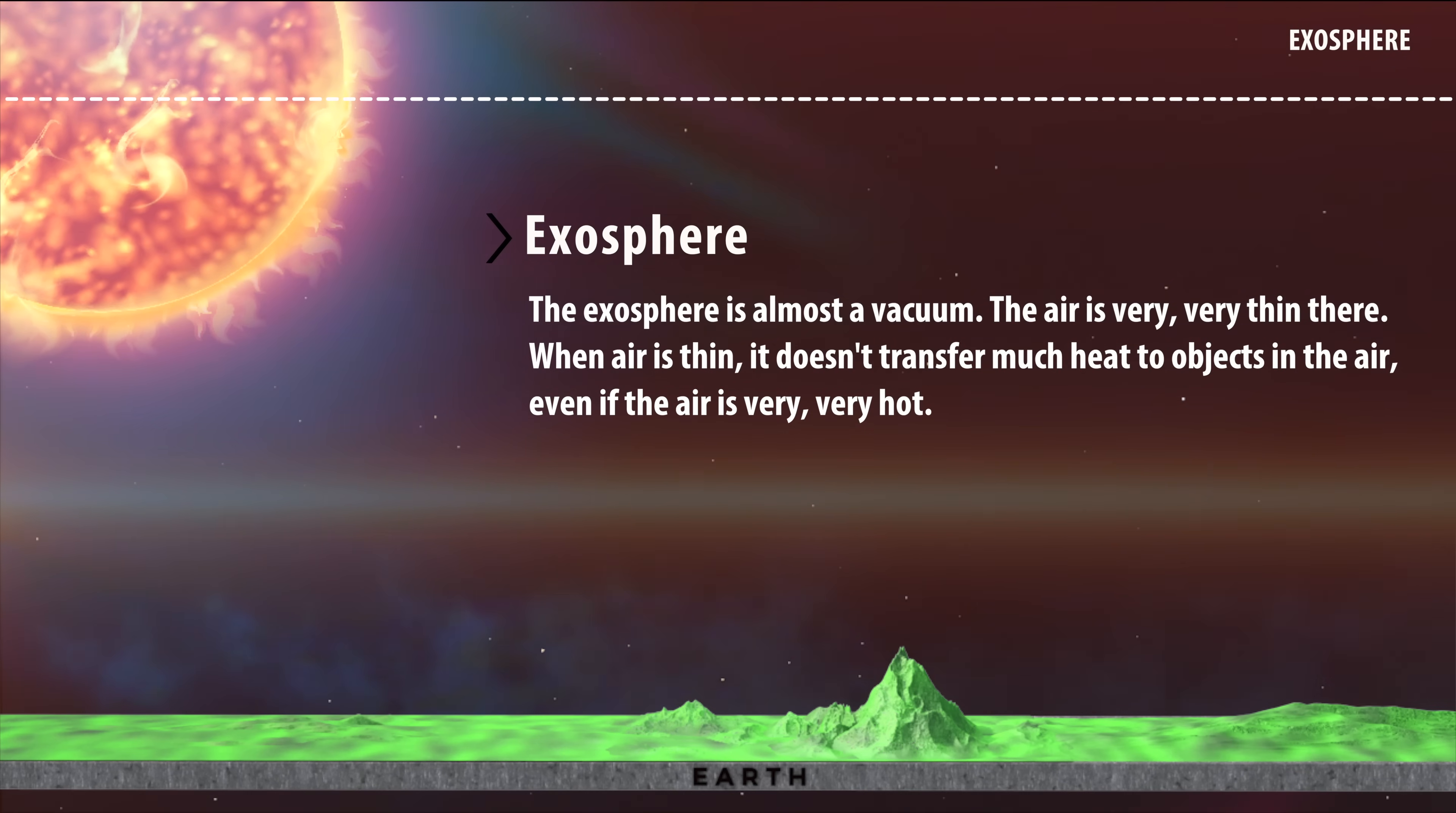The exosphere is almost a vacuum. The air is very, very thin. When air is thin, it doesn't transfer much heat to objects in the air, even if the air is very, very hot.